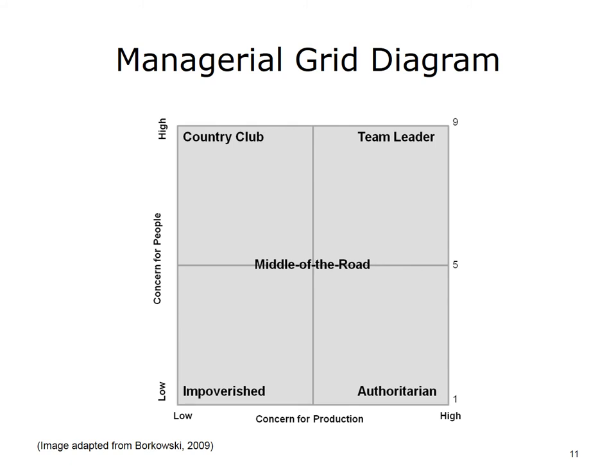You can see where each of the types of leaders falls on the grid. Represented in the center is the middle-of-the-road leader. In the top left corner, you find the country club leader. In the top right corner is the team leader. In the lower right corner, we find the authoritarian leader. Down in the lower left corner, we find the impoverished leader. In the next slides, we'll look at the style of leadership associated with each type.